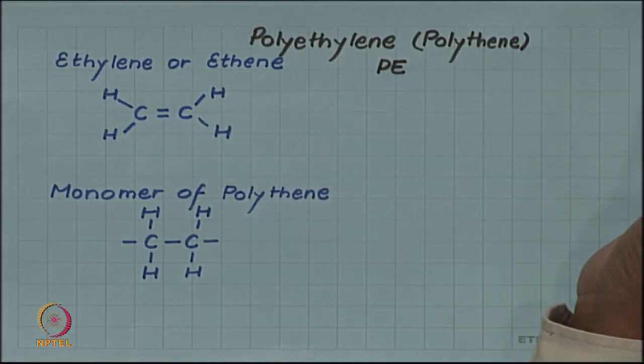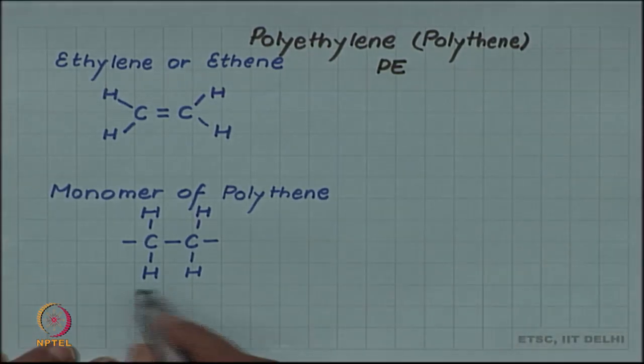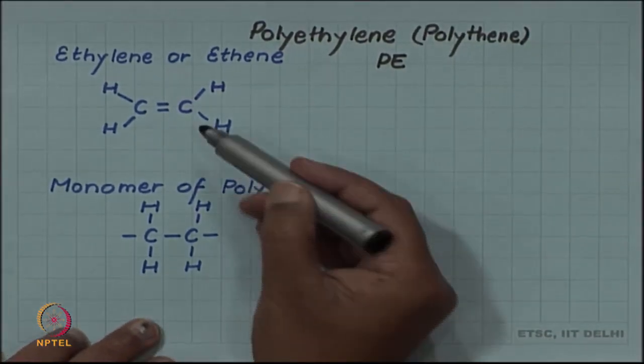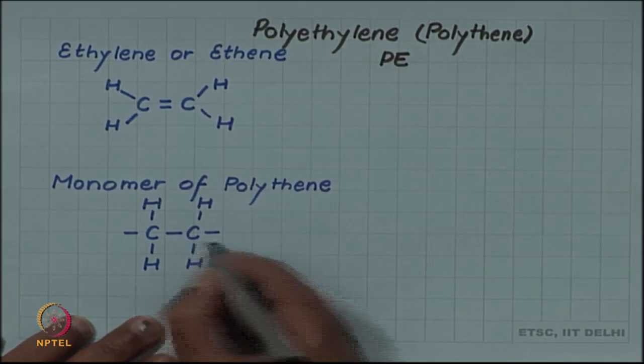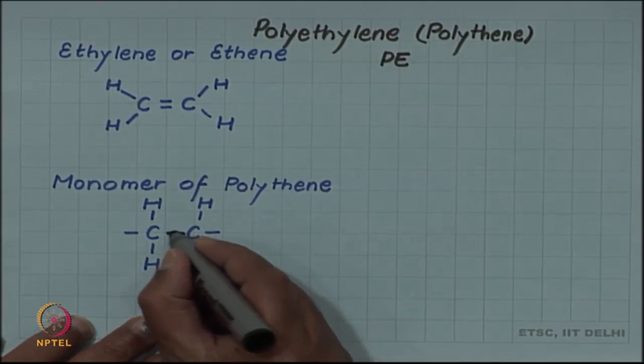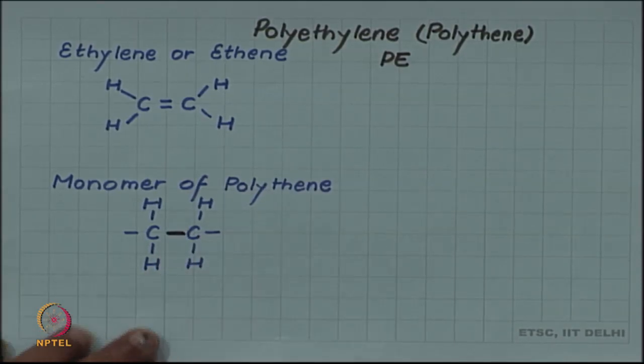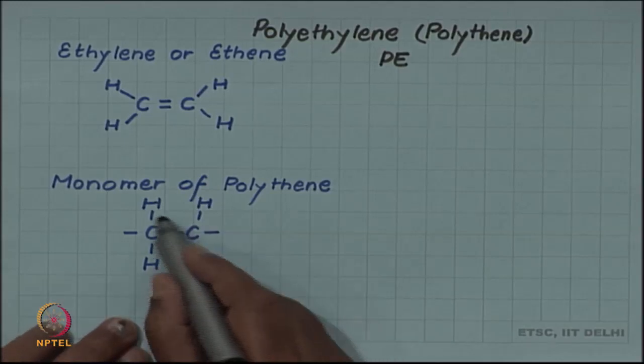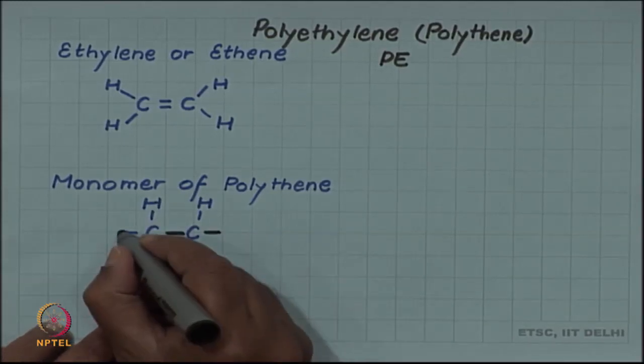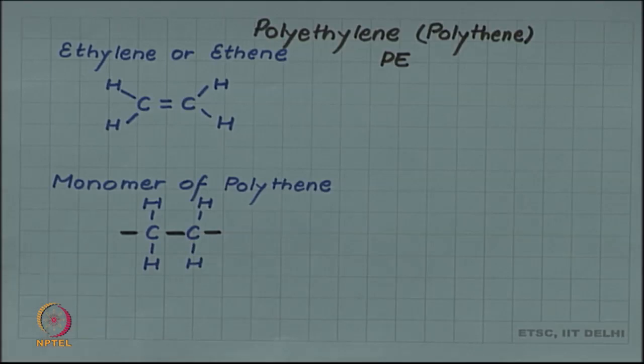But when this gas is polymerized, you get a monomer in which this double bond transforms to a single bond, thus satisfying the four bonds of carbon. You now have two free bonds which can join with other monomers or other molecules of ethylene.